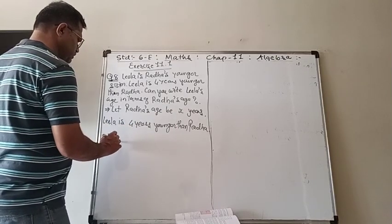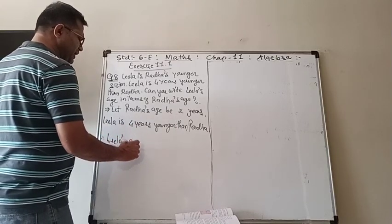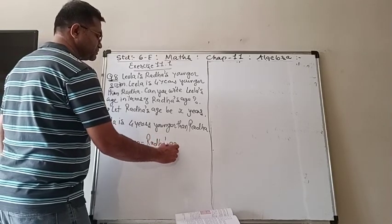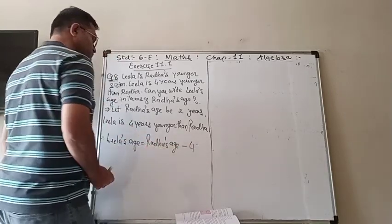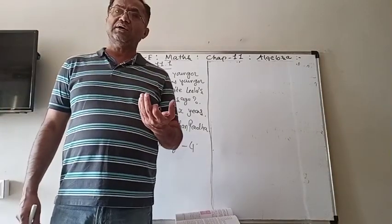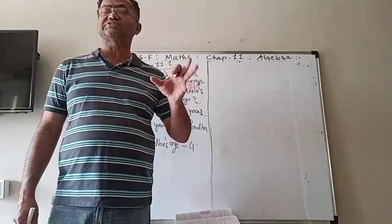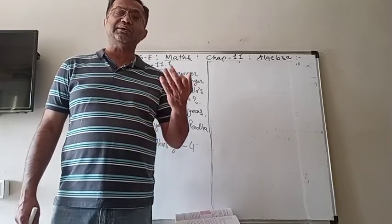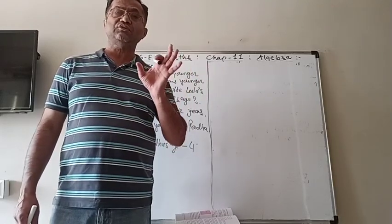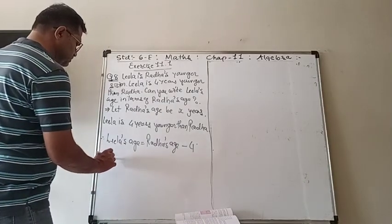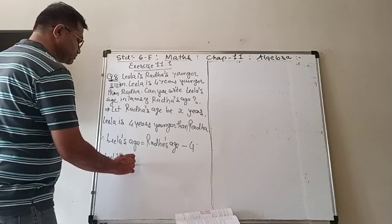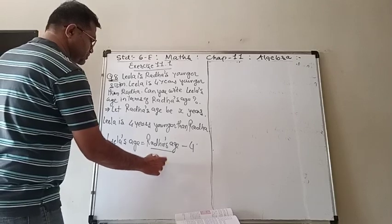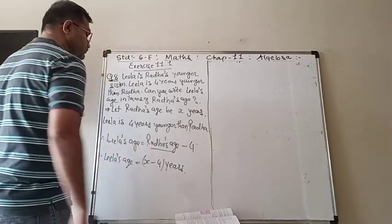So let Radha's age be X years as given. Now Lila is 4 years younger than Radha. Therefore Lila's age is equal to Radha's age minus 4. Since Radha's age is X years, Lila's age is equal to X minus 4 years.